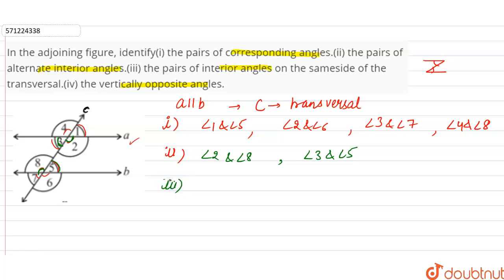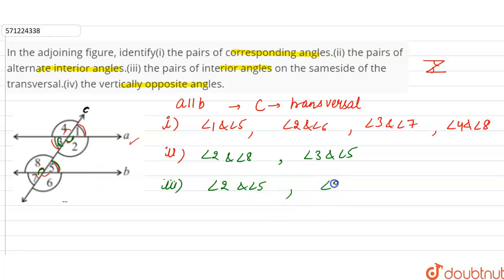The third part asks for the pair of interior angles on the same side of the transversal. Those are angle 2 and angle 5, which are on the same side of the transversal and are interior angles. Also, angle 3 and angle 8. So 2 and 5, and 3 and 8, are interior angles on the same side of the transversal.